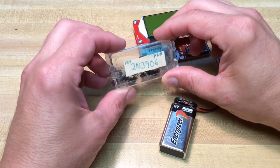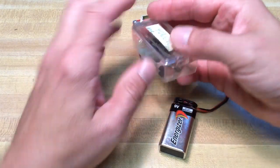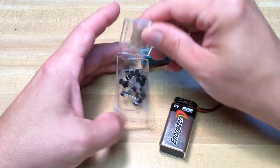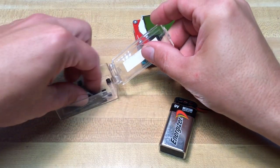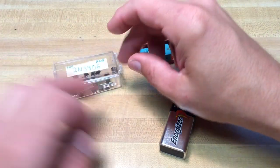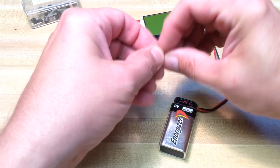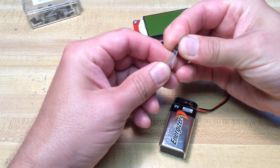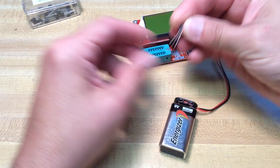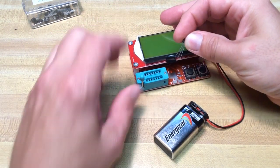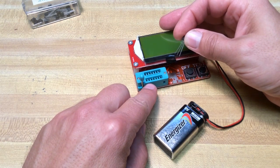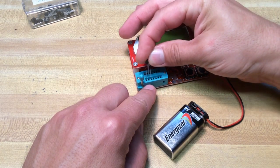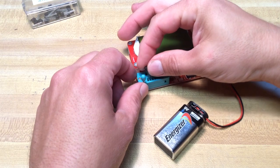We'll start out with a PNP 2N3906, which is just a general PNP transistor. Spread the legs apart a little bit here so it'll fit in the socket. From what I've seen before, use the first three pins in the socket here in the lower half. So we'll try that and see what happens.